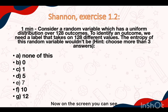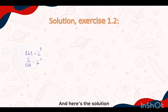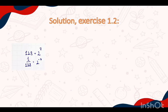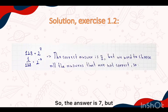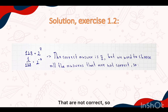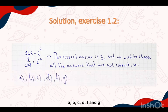Now on the screen you can see our next exercise. Here is the solution: 128 equals 2 to the power of 7, and 1 over 128 equals 2 to the power of minus 7. So the correct answer is 7, but we need to choose all the answers that are not correct. So the answer for this task is a, b, c, d, f, and g.